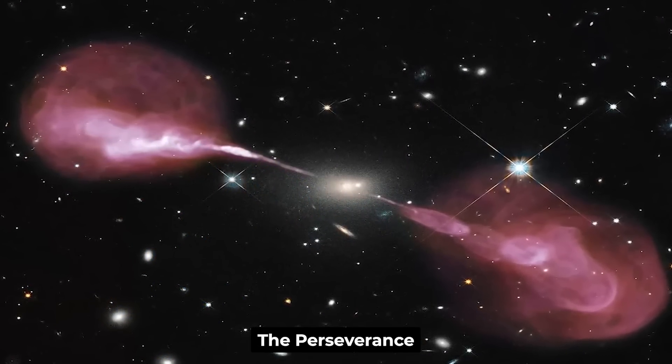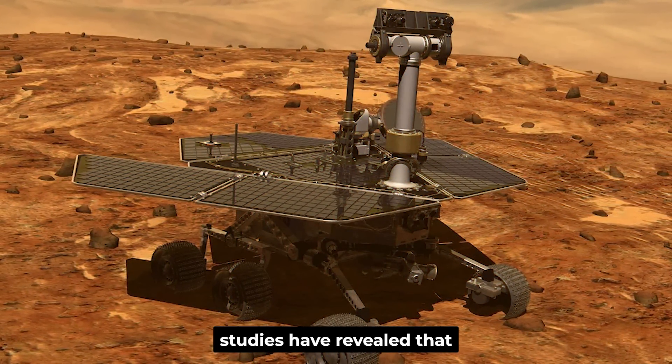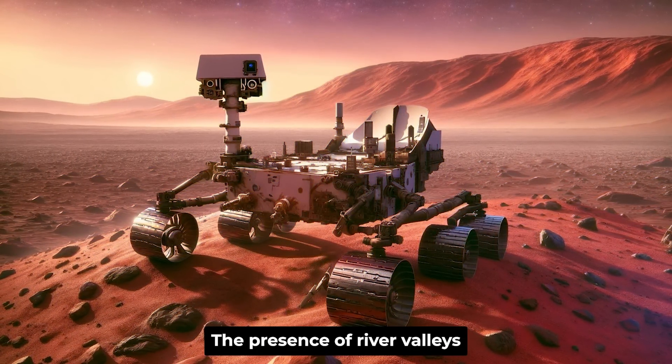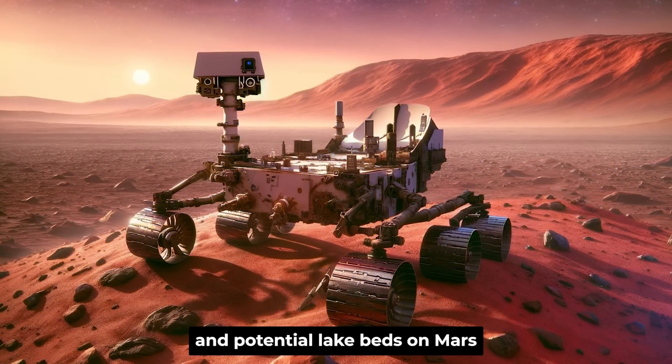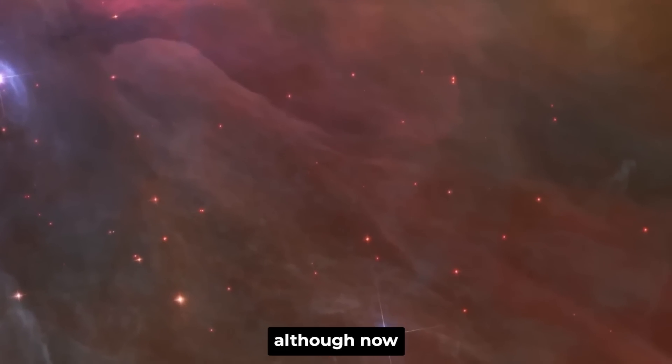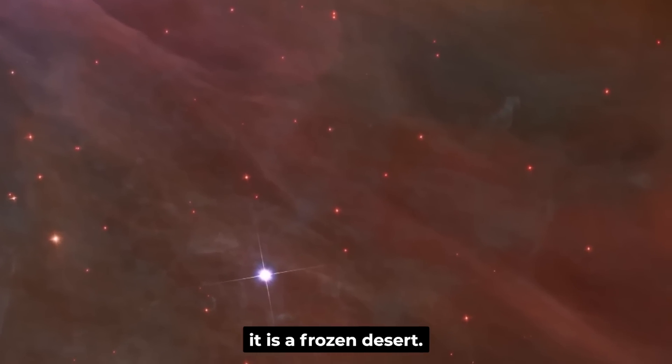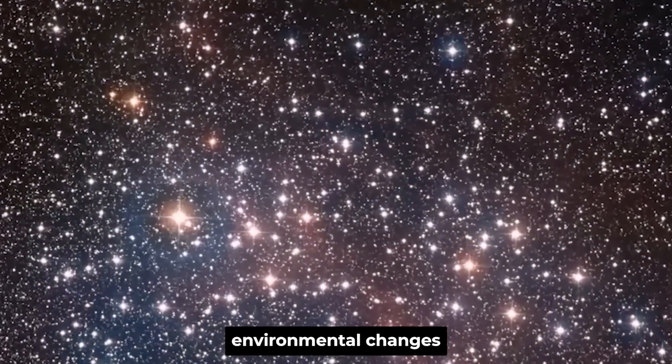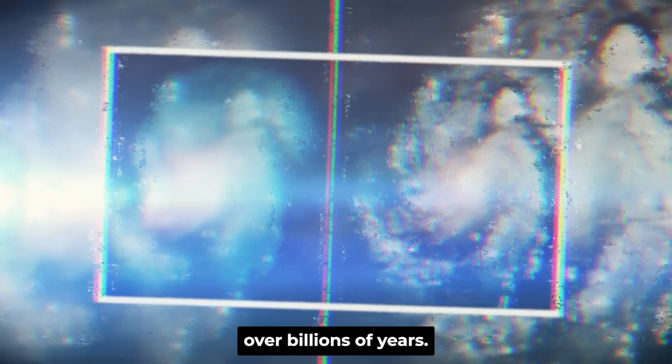Mars: the Perseverance Mars Rover's studies have revealed that Mars once had conditions that could have supported microbial life. The presence of river valleys and potential lake beds on Mars' surface points to a once warmer and wetter planet, although now it is a frozen desert. This transformation underscores the dynamic environmental changes that planets can undergo over billions of years.